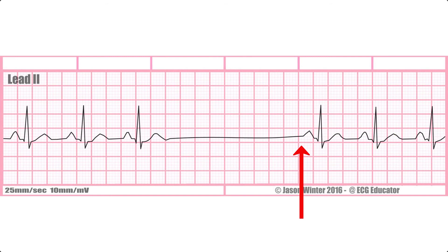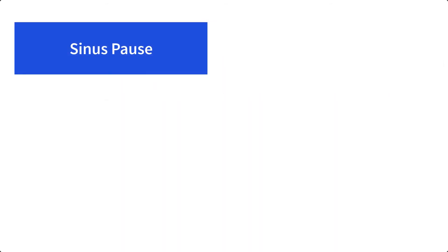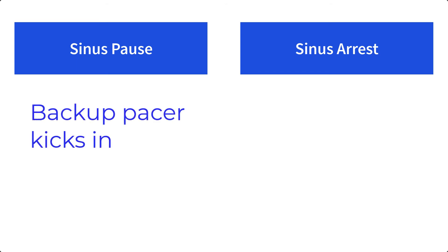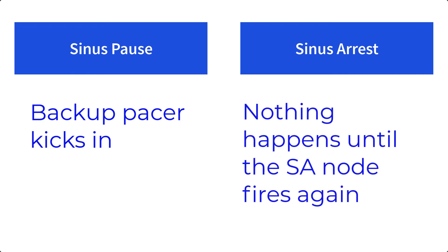ECG references in textbooks discuss two very similar phenomena: a sinus pause and a sinus arrest. The difference in those labels is dependent on where the next beat originates after that pause. If a backup pacemaker such as the AV node kicks in when the SA node fails to fire, we call it a sinus pause. A sinus arrest is a bigger concern — in that case, the backup pacemakers don't fire, meaning nothing happens until the SA node fires again.